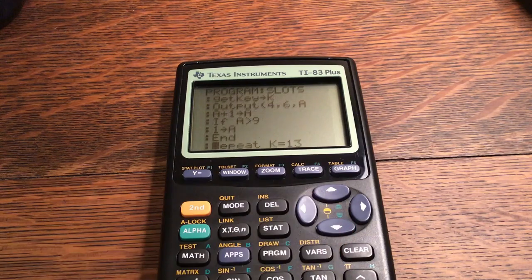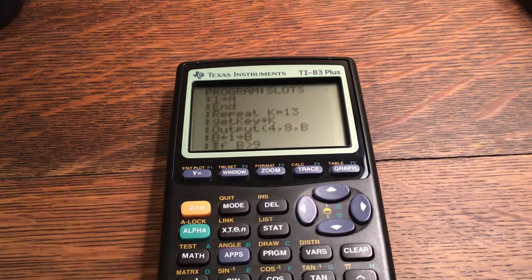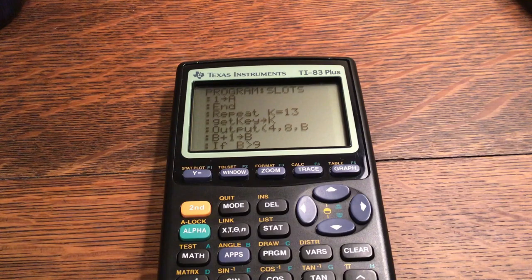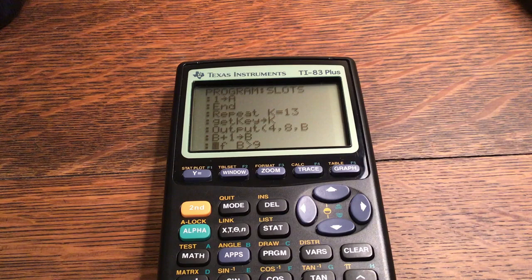Get key stored to K. Output four comma six comma A. A plus one stored to A. If A is greater than nine, one stored to A. End.